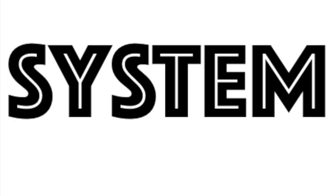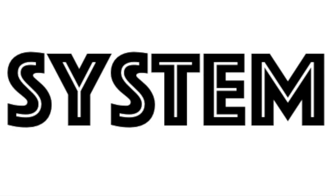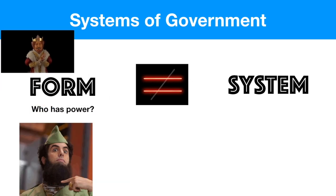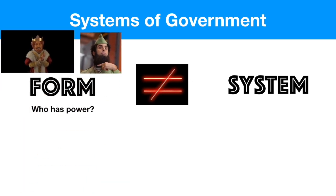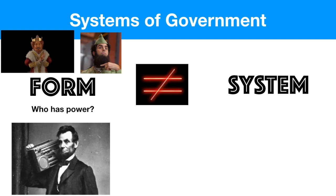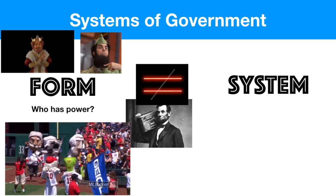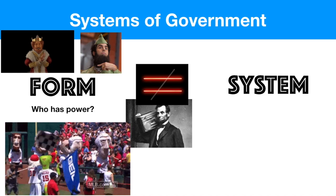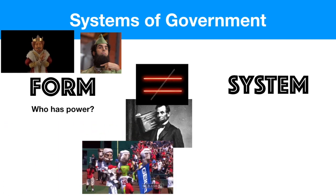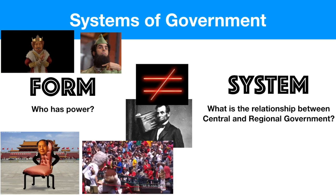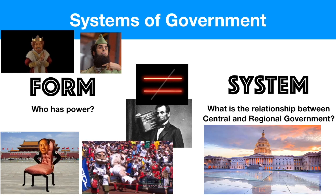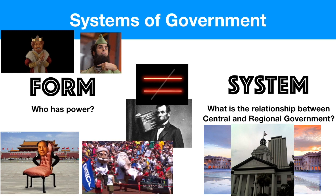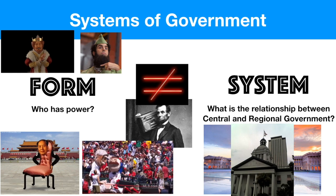The first thing we need to burn into our brains is that forms do not equal systems. Forms of government ask the question: who has power? And systems of government ask something entirely different. When we look at a country's form of government, we might find a monarch, a dictator, a president, an oligarchy, or even a chairman. That's the form — that's who rules. Under a system of government, we're looking at the way power flows and how the central and regional governments interact with one another.